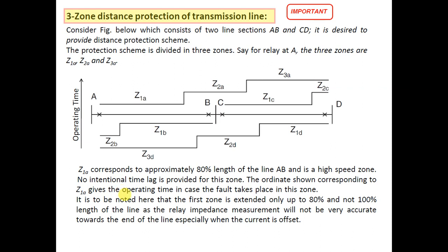Here we can see a transmission line section represented by A-B and B-C, and two adjoining lines A-B and C-D. It is desired to provide three-zone distance protection for this whole line section. On both ends of the lines, there are relays. The relay at end A is denoted by ZA, the relay at end B is denoted by ZB, the relay at end C is denoted by ZC, and the relay at D is denoted by ZD.